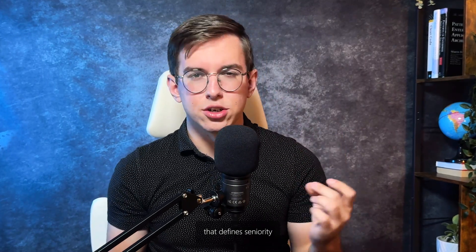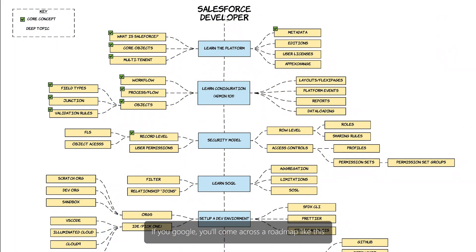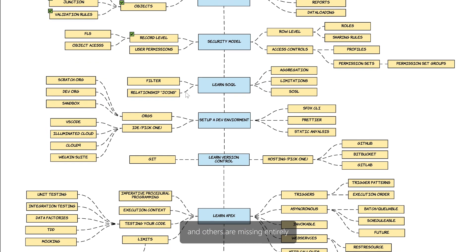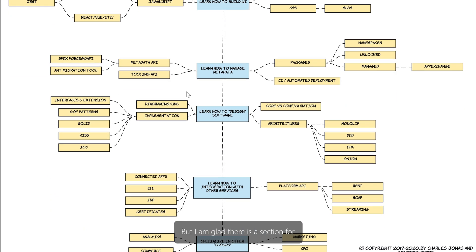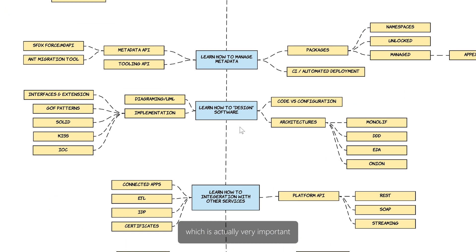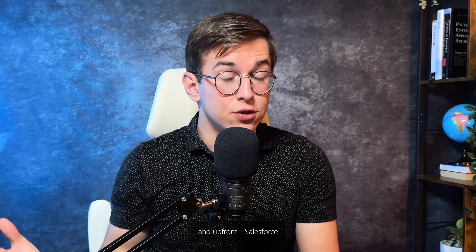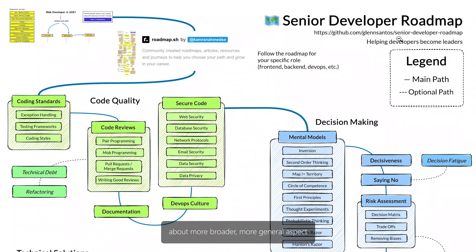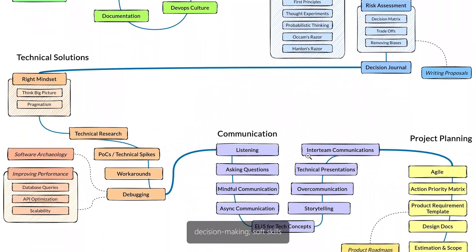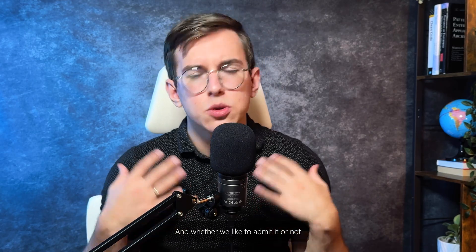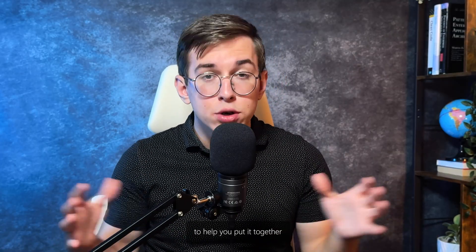So it looks like there is something more — there is Salesforce, and there is something more that defines seniority. If you Google, you'll come across a roadmap on how to become a Salesforce developer. I actually like it, though some things are not relevant anymore and others are missing entirely, like the principles of OOP. But I'm glad there is a section for learning how to design software, which is actually very important. Behind the obvious Salesforce roadmap is a broader, more general one — code quality, which is often overlooked, decision-making, soft skills, and even leadership. Whether we like to admit it or not, those two roadmaps merge into one coherent picture of how to become a senior Salesforce developer.